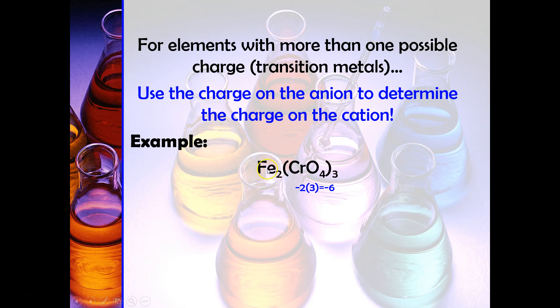If you look on the periodic table there's no +6 there, there's either 2 or 3. That's where you have to say, well if this side is +6, we have to divide that +6 among the two irons. That's why you'll do the +6 divided by 2, and that'll tell you that the charge on the iron has to be +3. So when you write the chemical name you'll be writing iron(III) chromate.